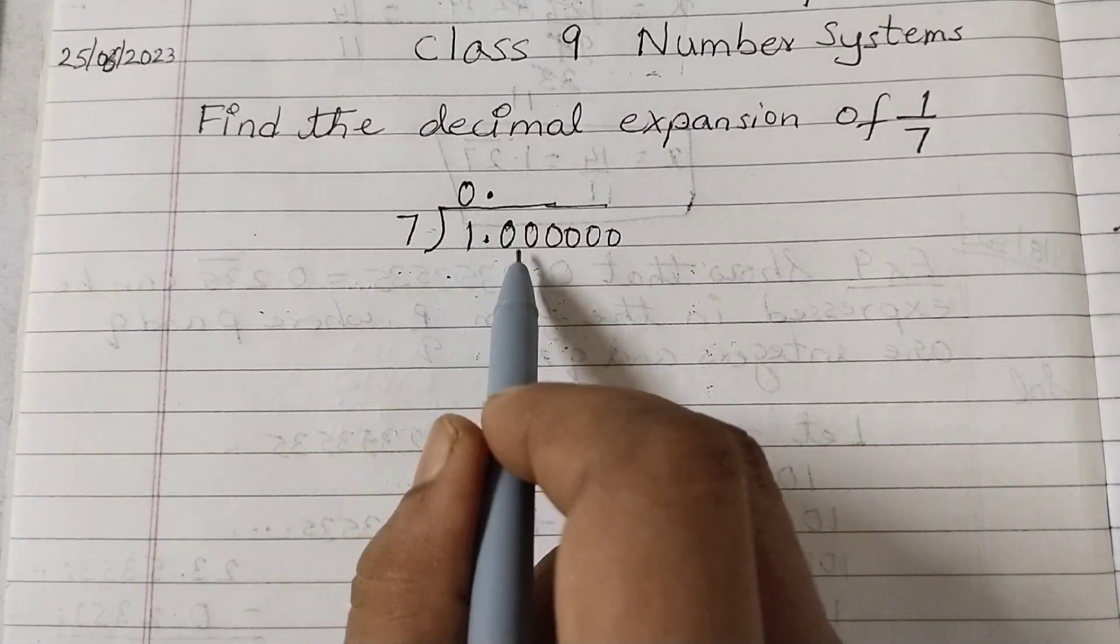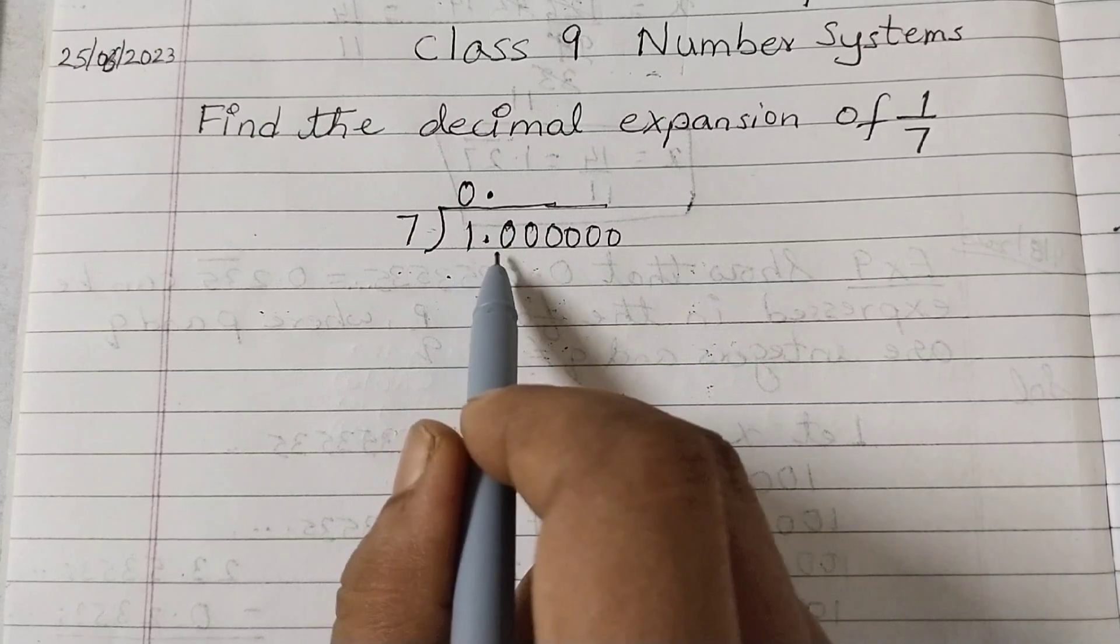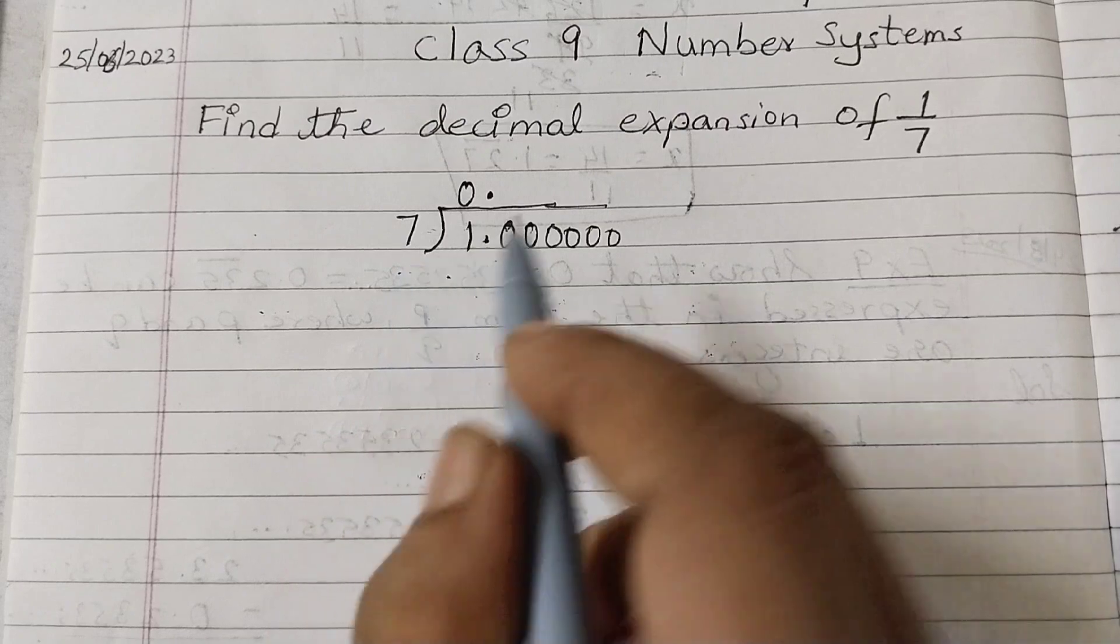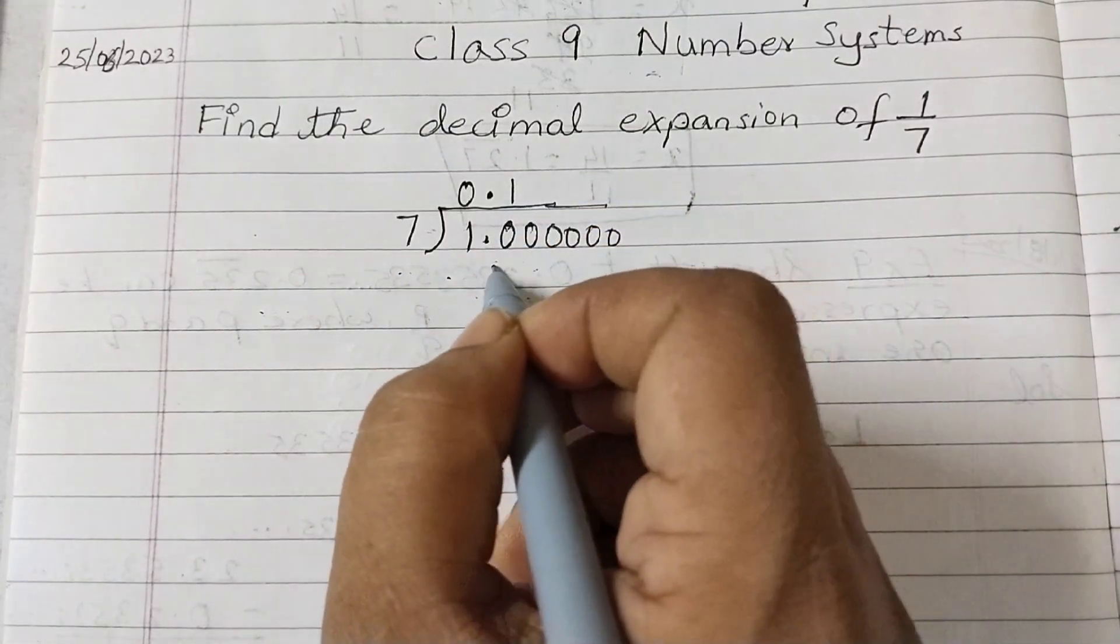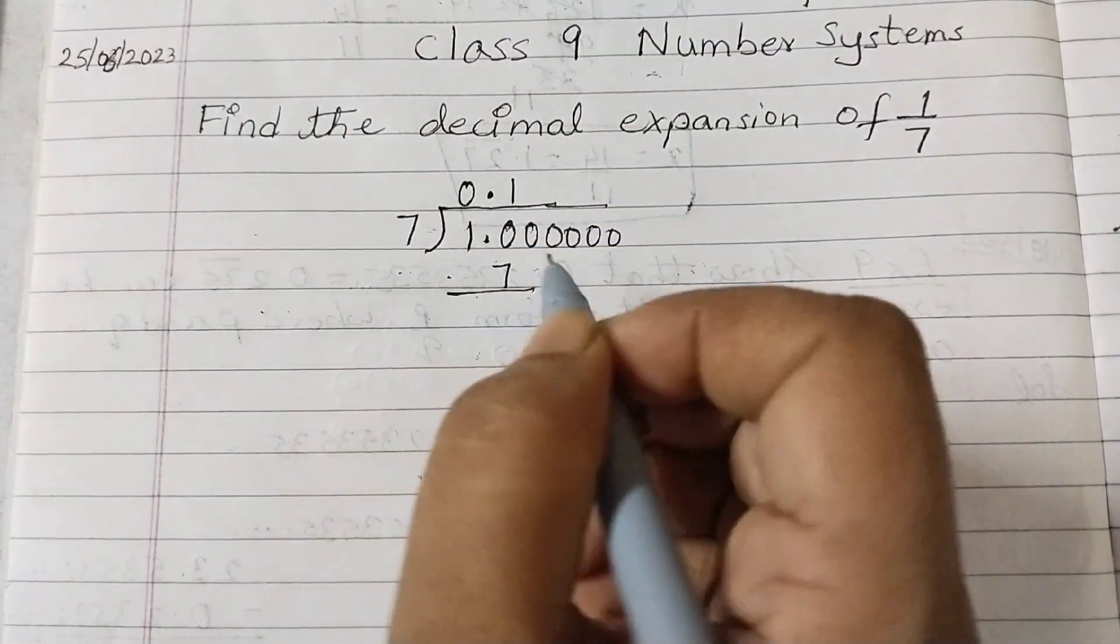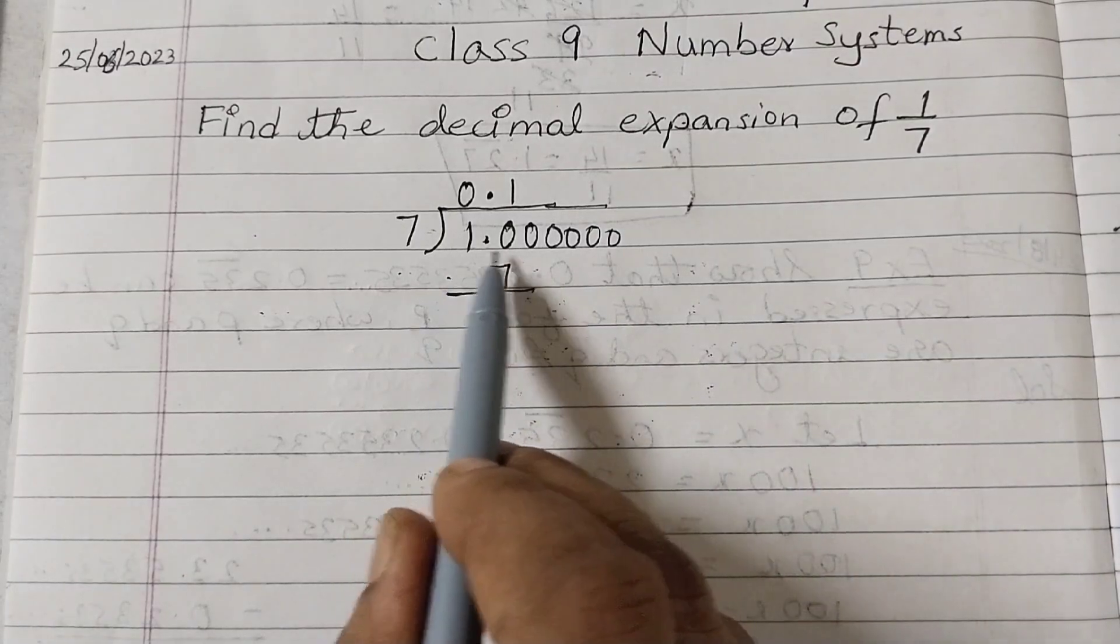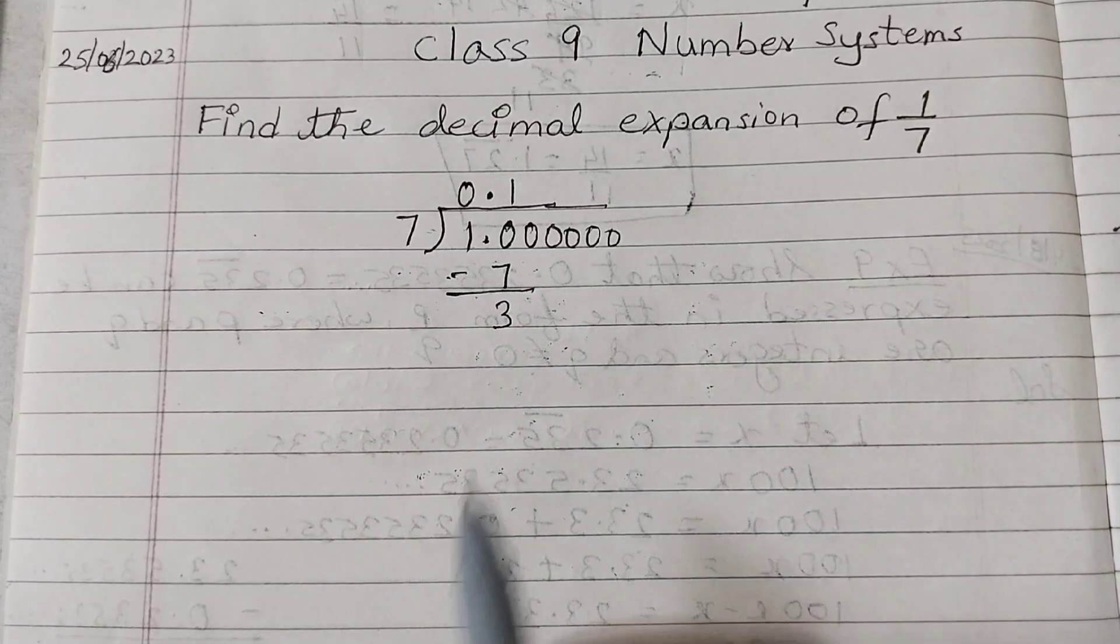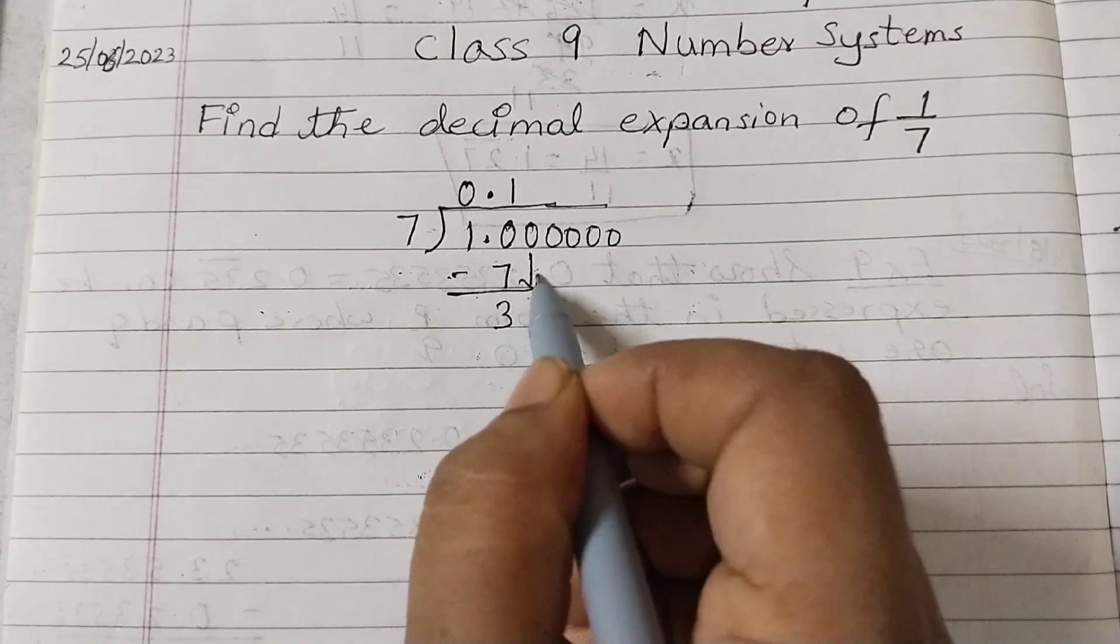Now we will take the first two digits as 10. 7 times 1 is 7. 10 minus 7 is 3. Bring the next 0 down.